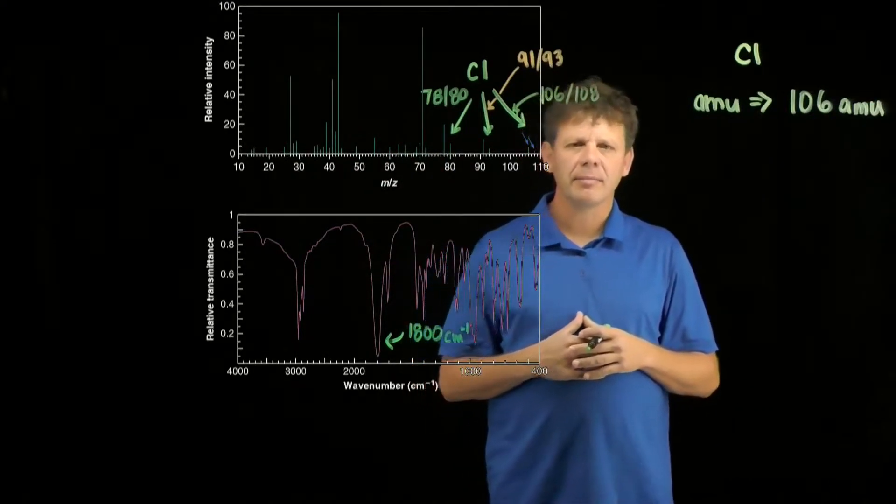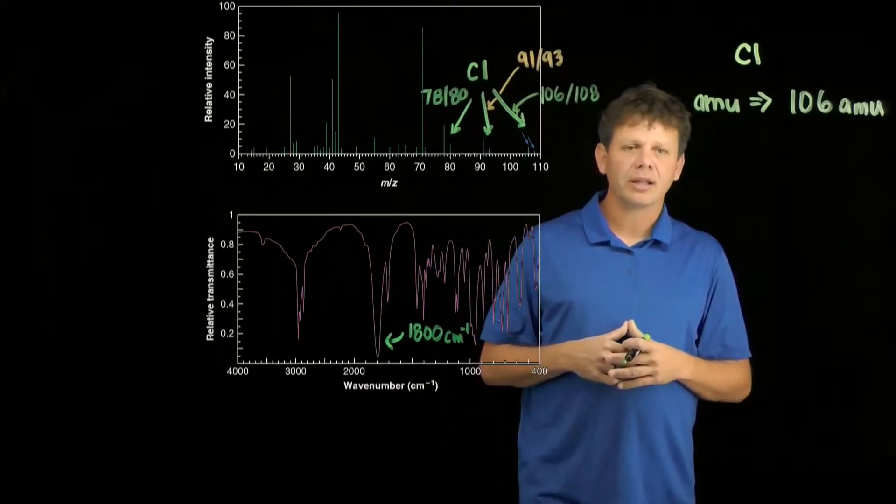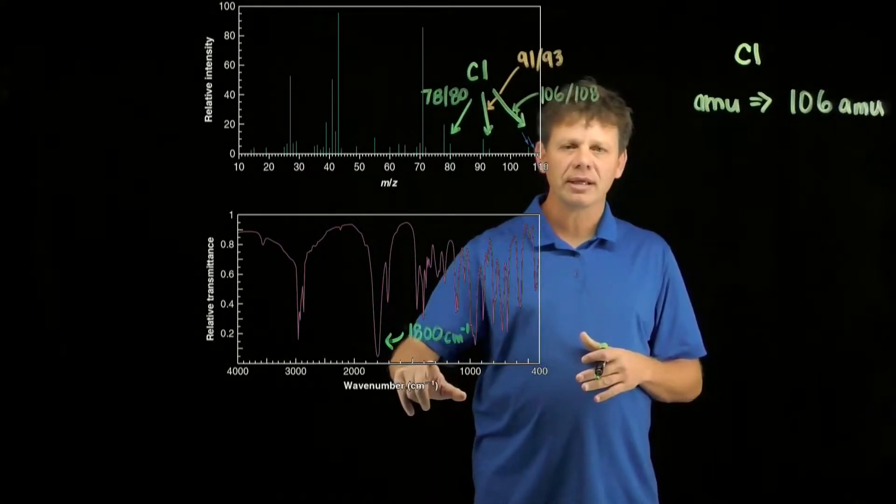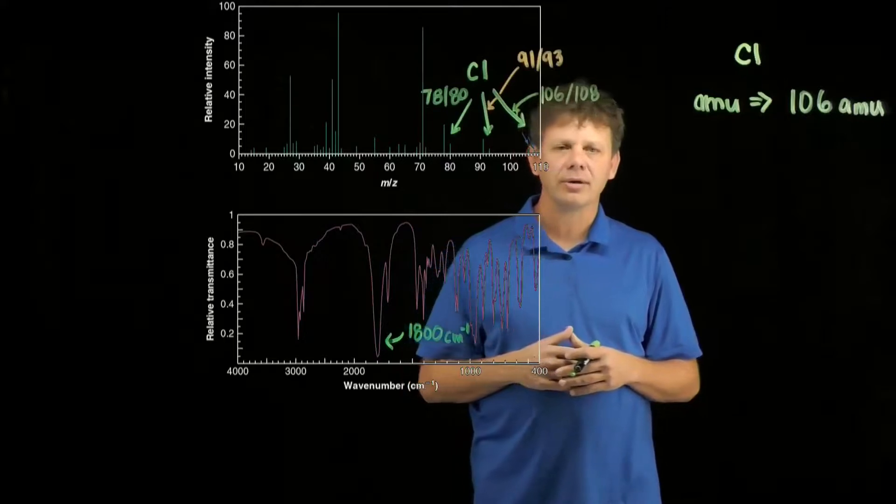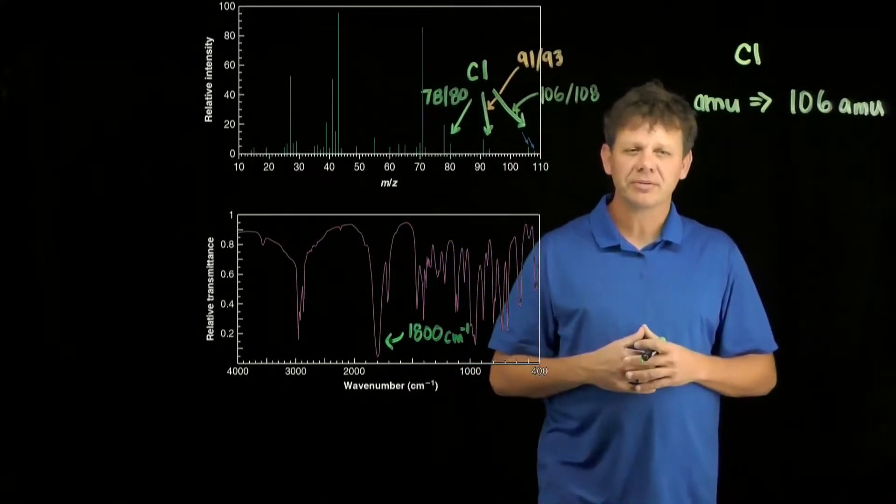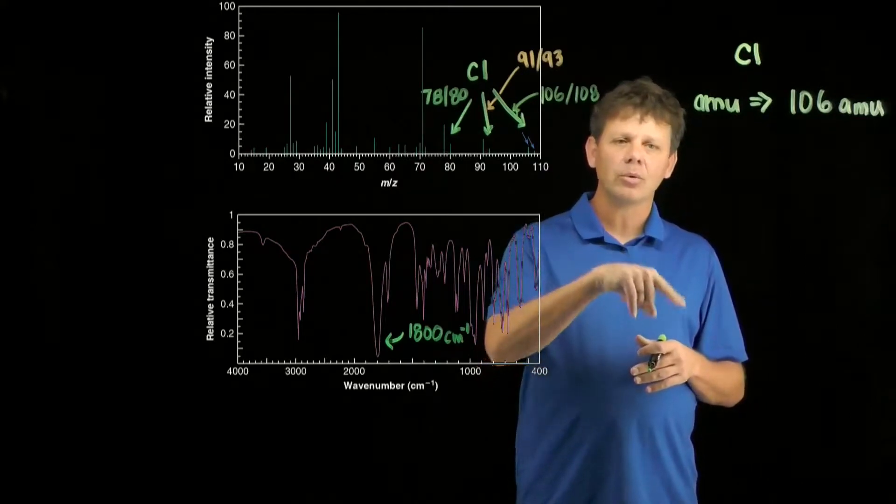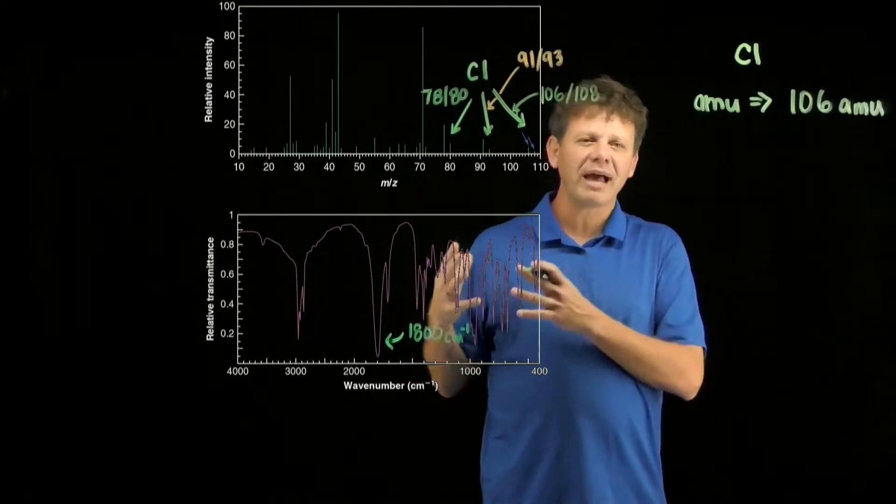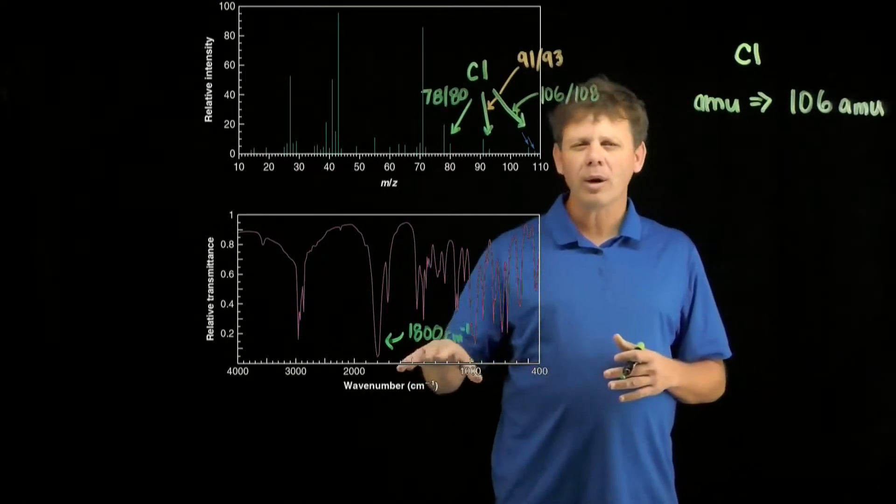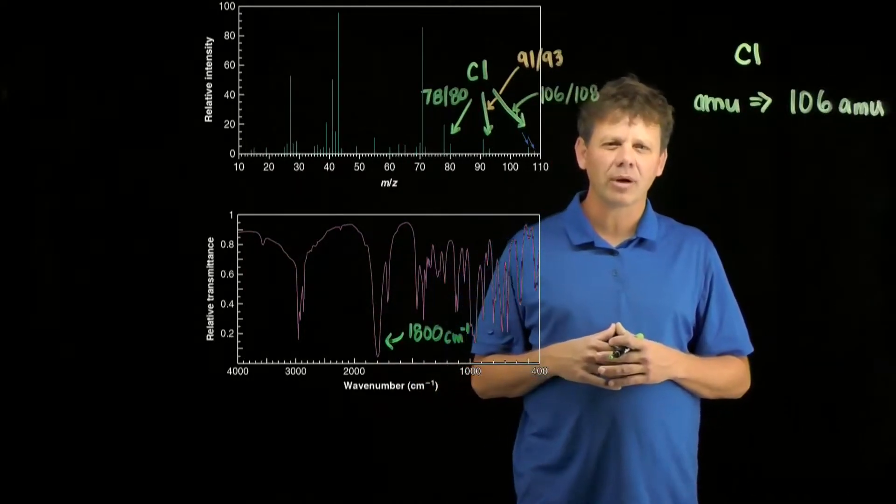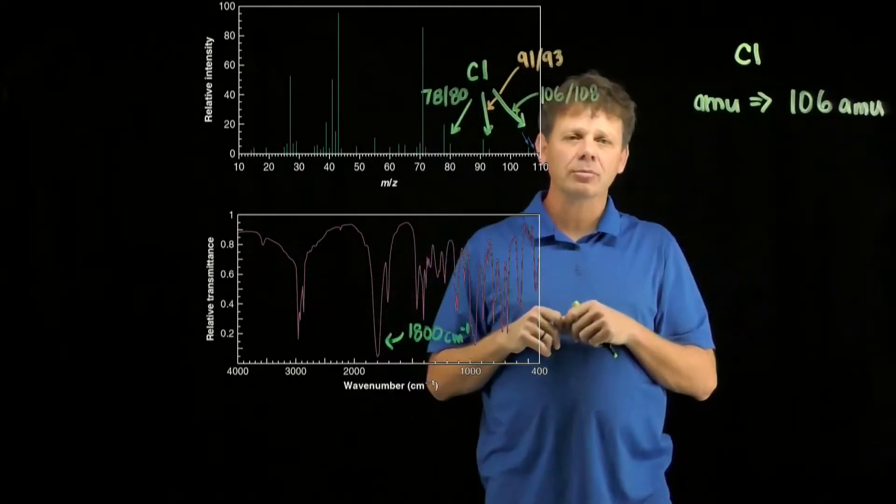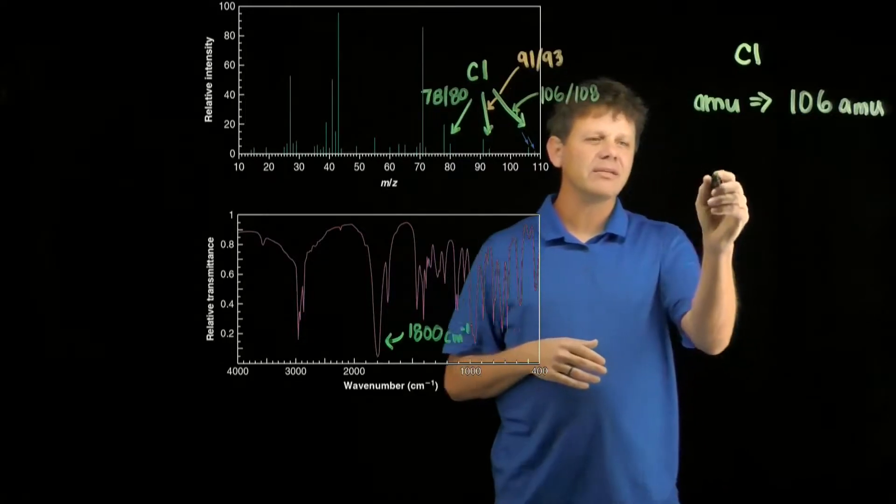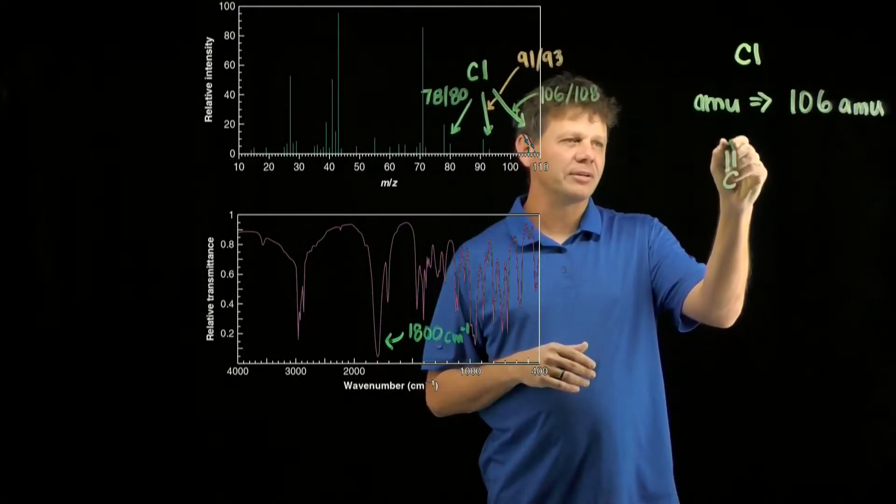What does the IR tell us? We know that IR is really only going to give us information about functional groups, and the key band here is this one at 1800. 1800 is in that region where we would expect a carbonyl, but not a ketone or ester or aldehyde. Being that high really is indicative of having an acid chloride. The mass spectrum told us there's a chlorine, so having this really high carbonyl band allows us to believe that this molecule contains an acid chloride.